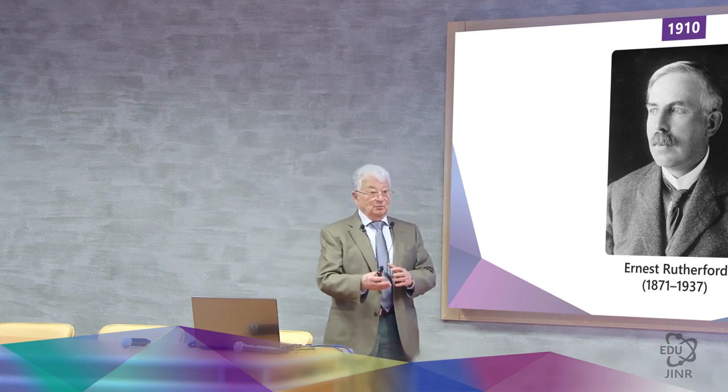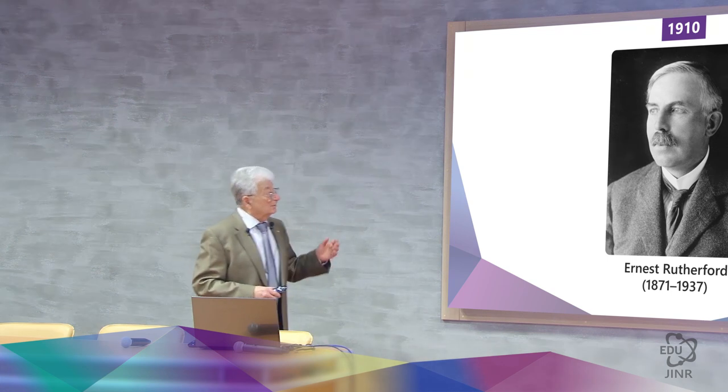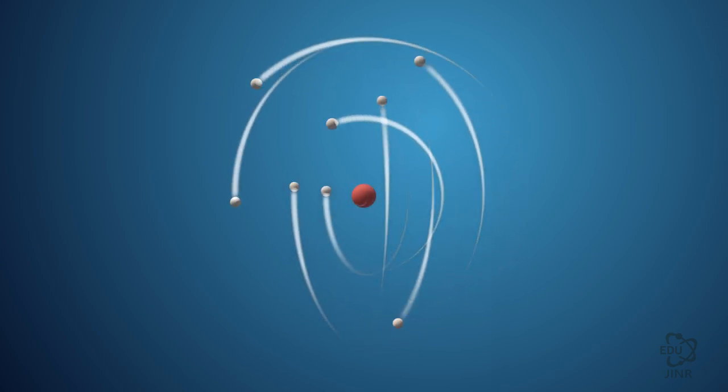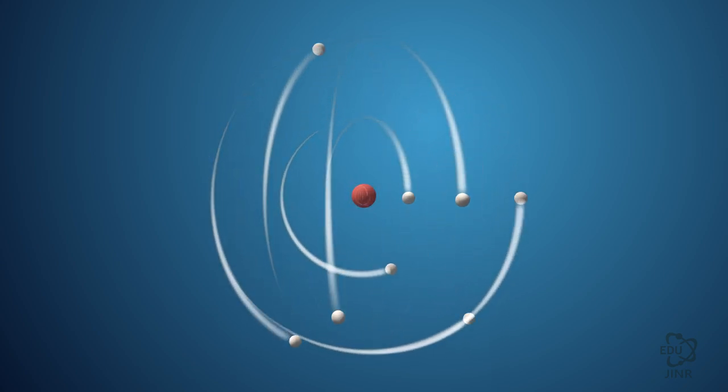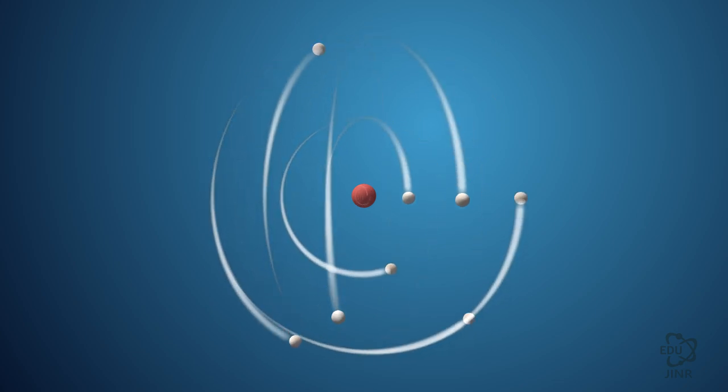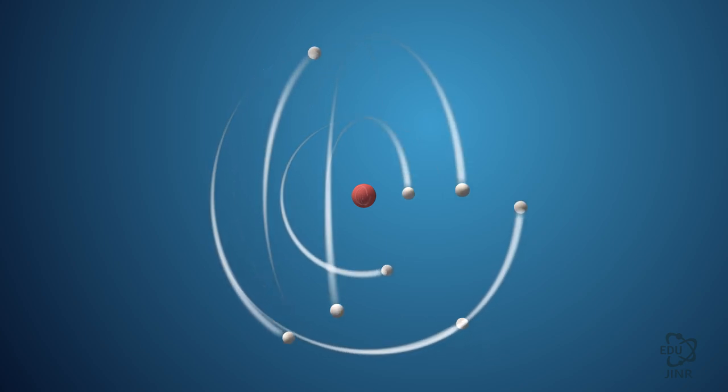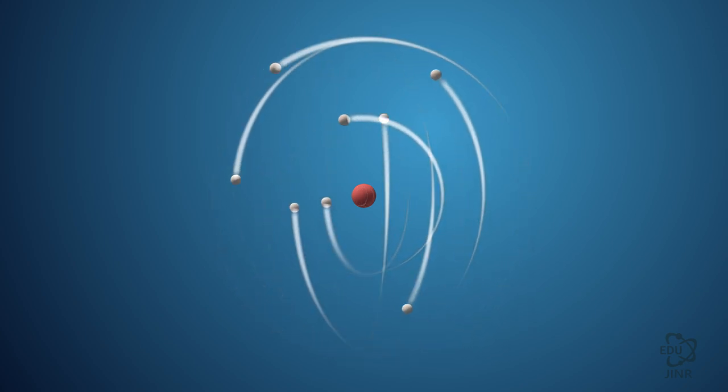The atom, which contains both positive and negative charges, looks as though it has a very small, dense formation in its center, which he called the core. And the electrons, which by that time were known, revolve around it at a considerable distance.